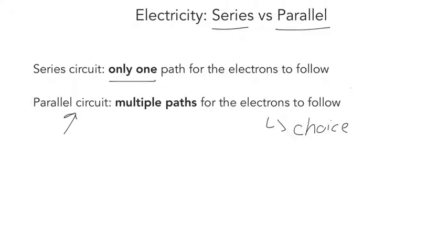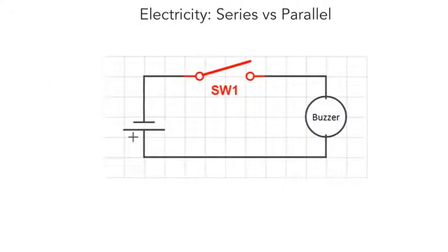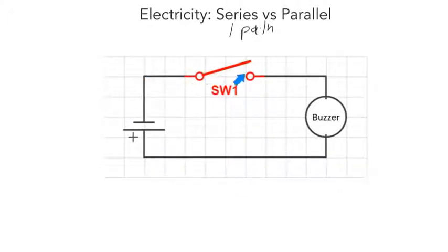We're going to take a look at a diagram for a series circuit and a parallel circuit and compare the two. Here we have an example of a series circuit. A series circuit is a circuit that only has one path, and we can tell that because there's only one loop. Following the path of the electron starting from our power supply, going through our switch, down to the buzzer, and then back to the power supply — there's only one path, so the electron doesn't have a choice of what elements it's going through.